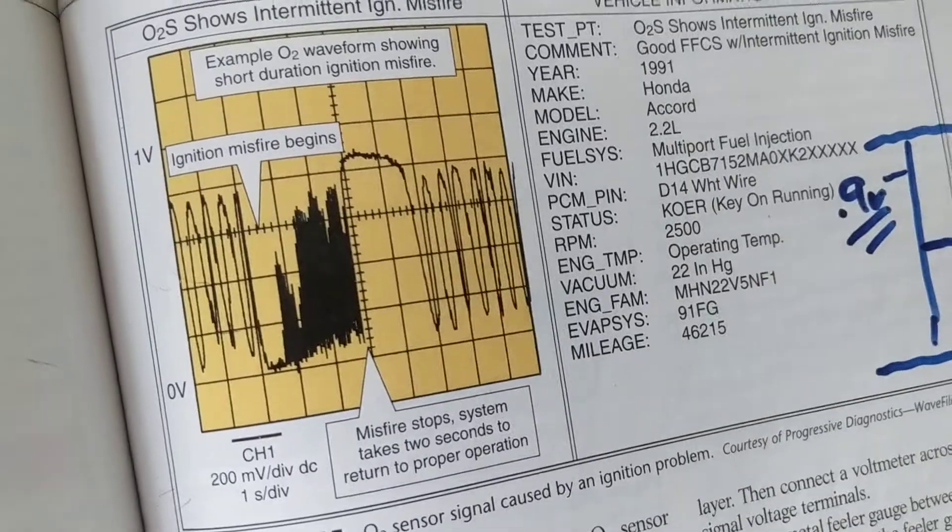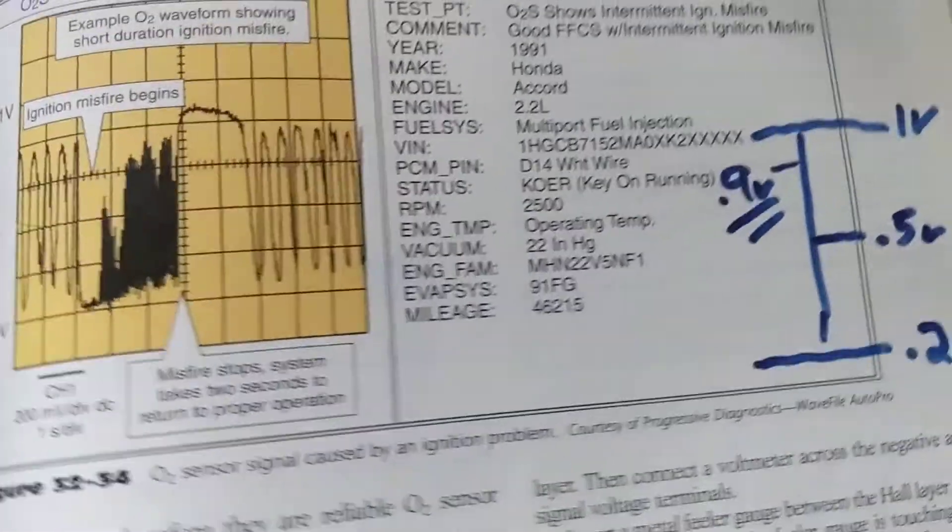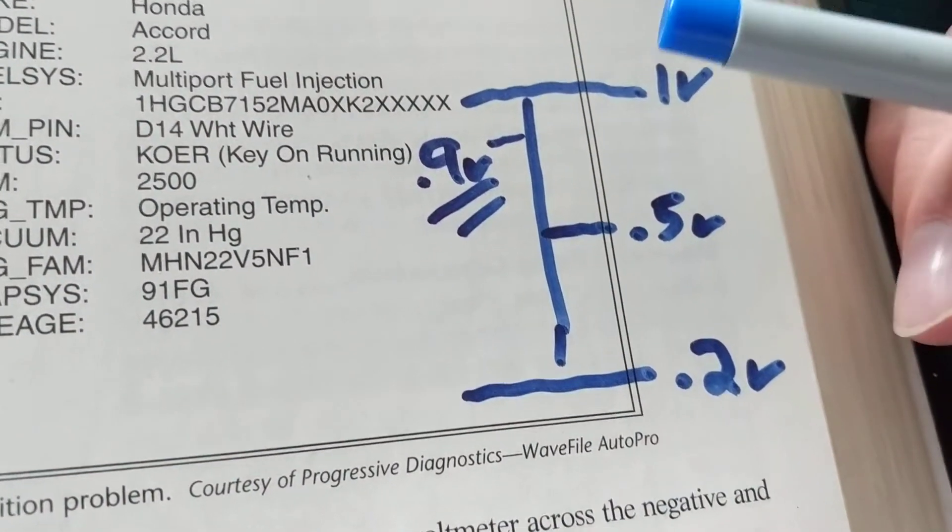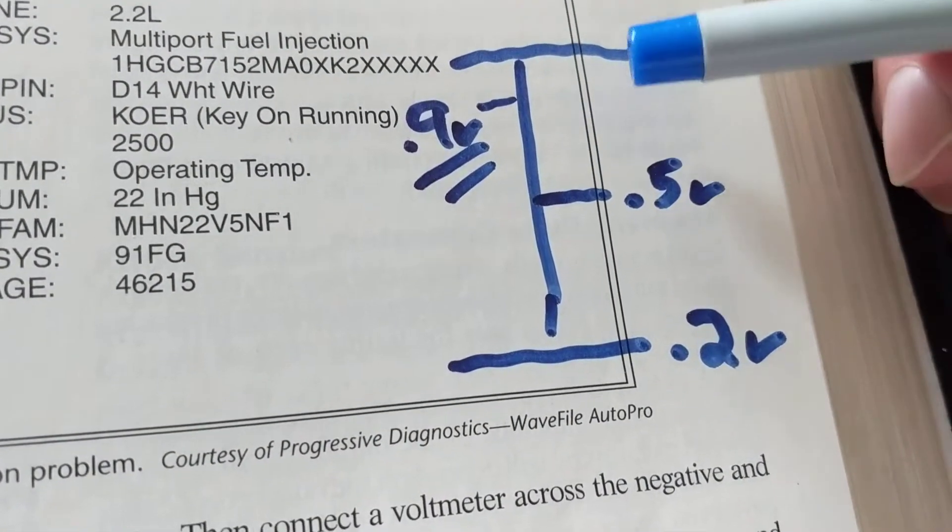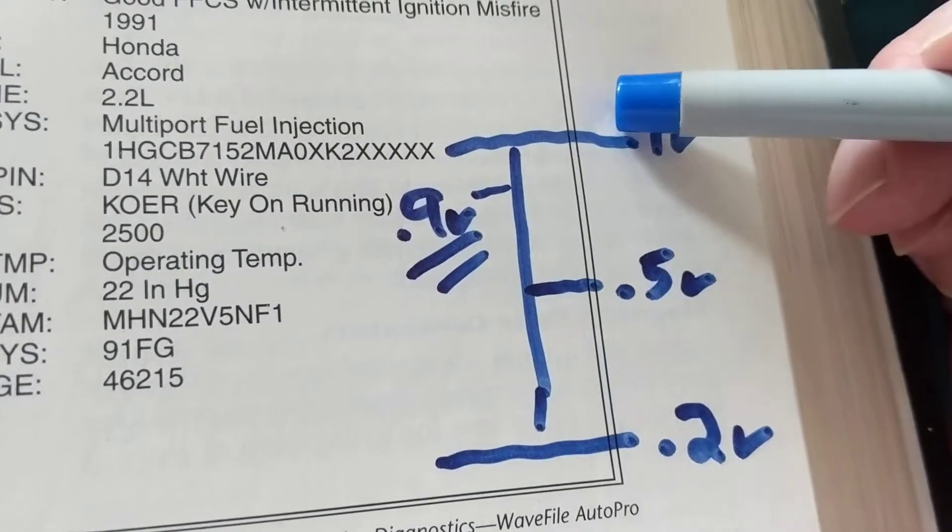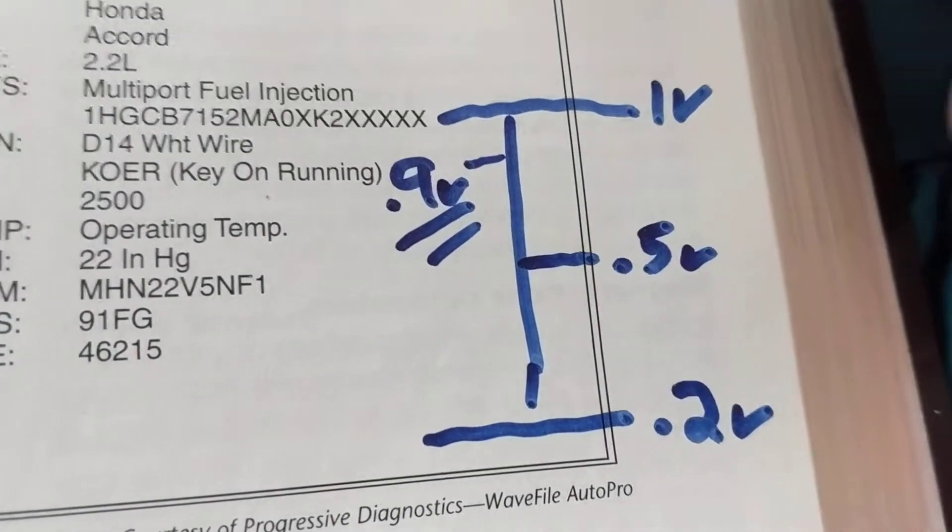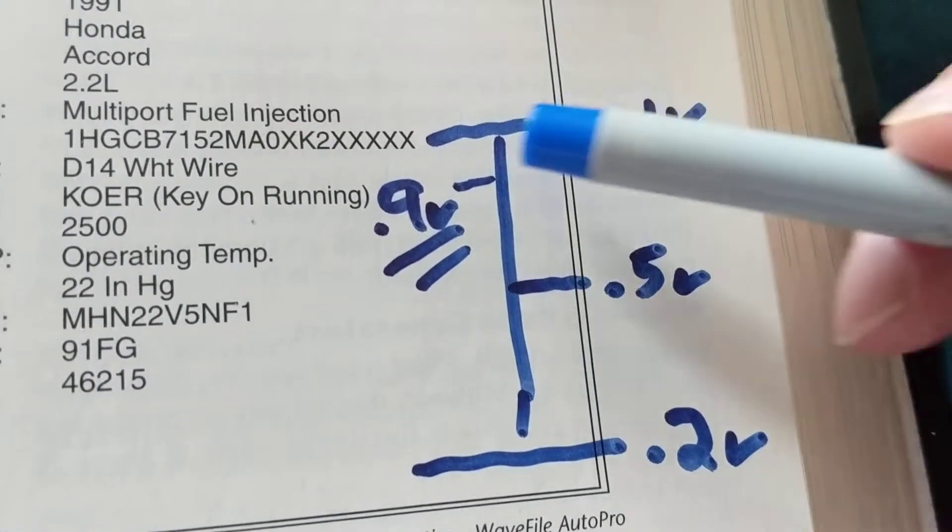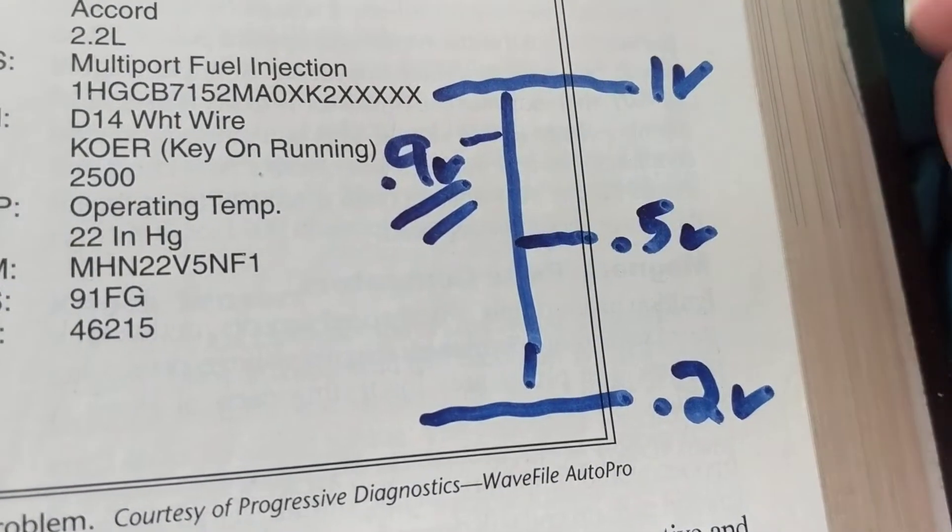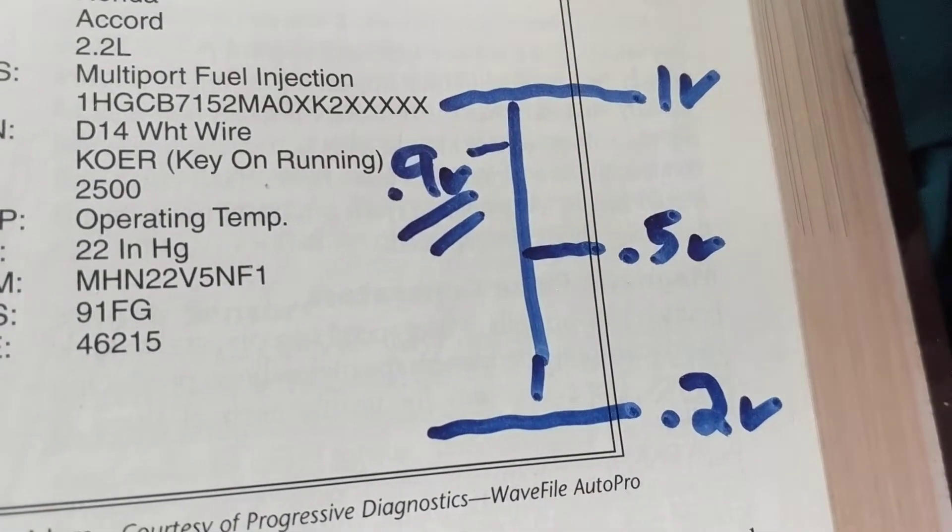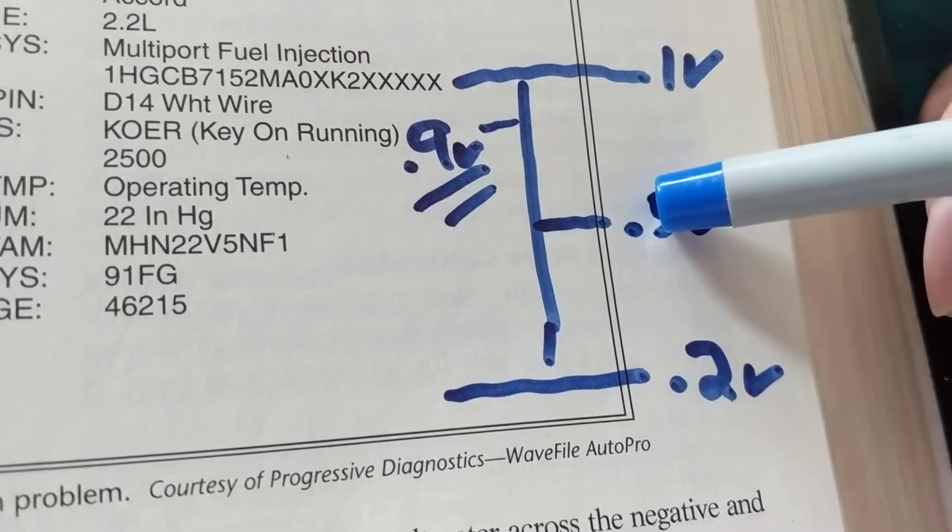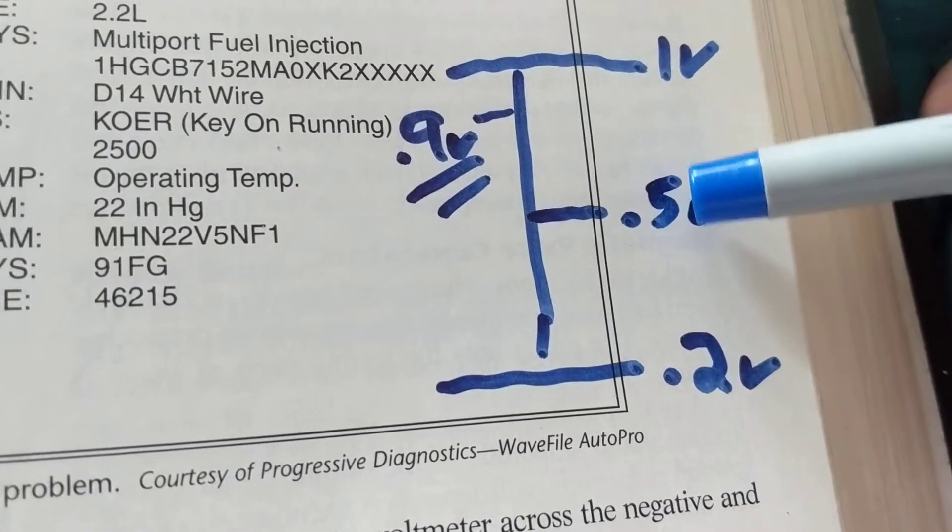Let's say, for example, you have a sensor, any sensor—doesn't matter, TPS, mass airflow sensor. This is a sensor with imaginary values. One volt over here. The average is 0.5 volts. That's what usually I see with a sensor. This is normal: 0.5 volts. 0.2 volts is the low threshold, the upper threshold is one volt.